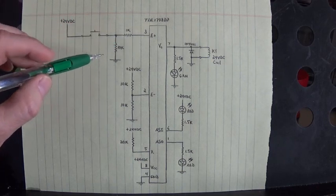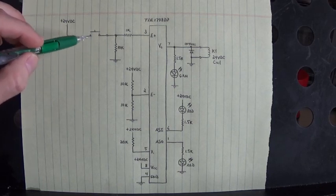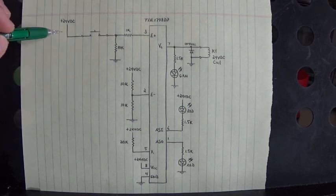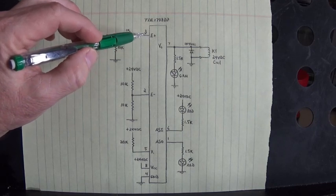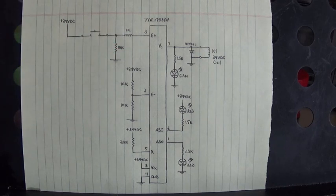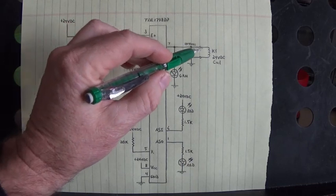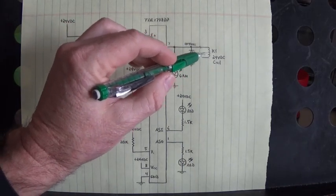When I push the button, plus 24 volt system is applied to pin 3, the non-inverting input, and that turns on that relay right there.